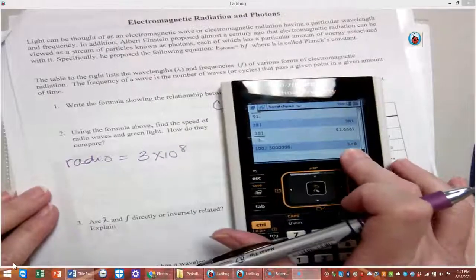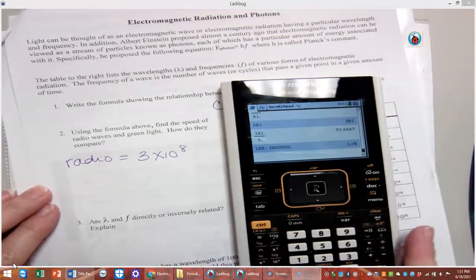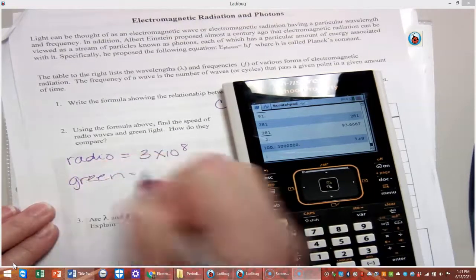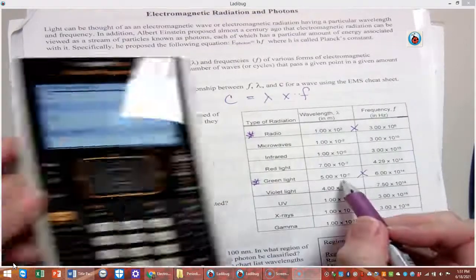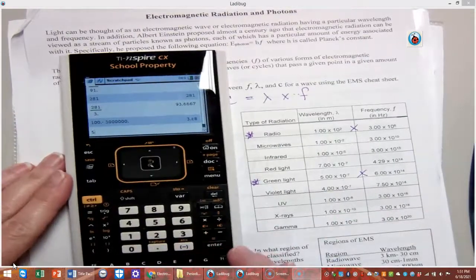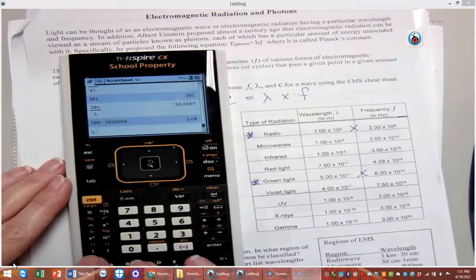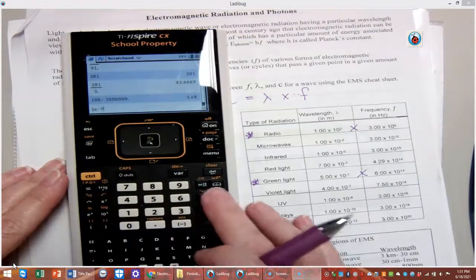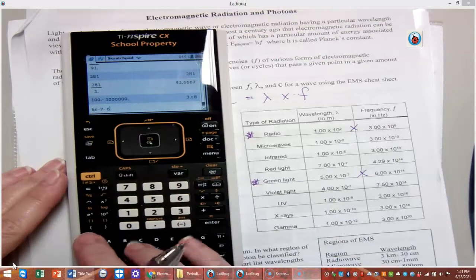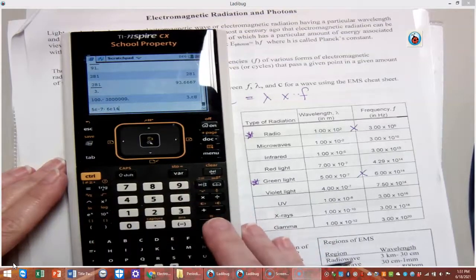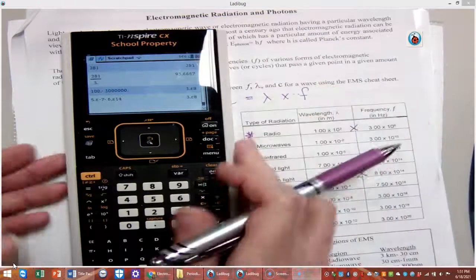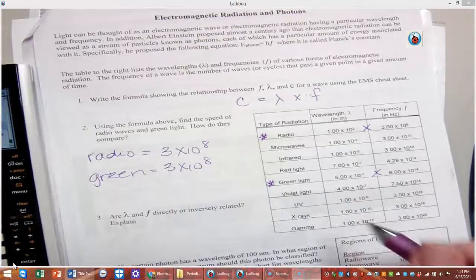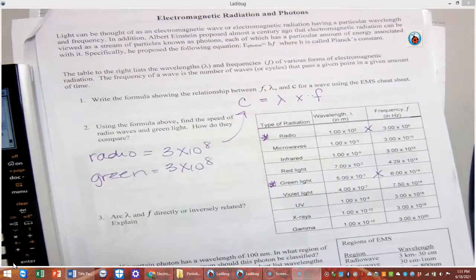What does that mean? That means that radio has a speed of 3 times 10 to the 8th. Don't put E8. Put times 10 to the 8th. That's calculator talk. Now we're going to do the same thing for green light. We're going to have 5, and then we're going to use the EE button again, negative 7 times 6, EE 14. So there it is. Again, enter. What do we get? Notice it's the same thing. Why would it be the same thing? Because they're all traveling at what? The speed of light, which is our constant.